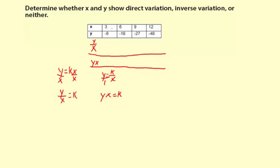So what we're going to do is, based on these table values, figure out whether we have a constant ratio for y divided by x, or y times x. And that will help us determine whether we have a direct or inverse variation, or perhaps neither, if neither of these has a pattern.